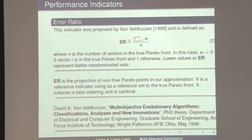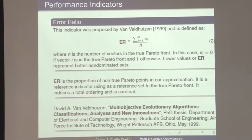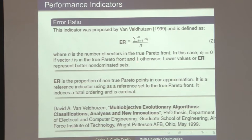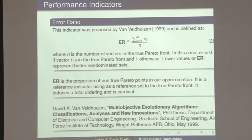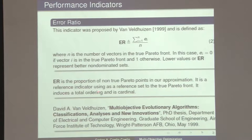The next indicator is the error ratio. This is a very old indicator, proposed by Veldhuizen in his PhD thesis in 1999. ER equals this summation of E divided by N. N is the number of solutions we have in the true Pareto front. E takes either zero if the solution is in the true Pareto front, or one if it's not. So the ideal would be that this value is zero — meaning all the points we obtain are in the true Pareto front. The error ratio is defined as the proportion of non-true Pareto points in our approximation.